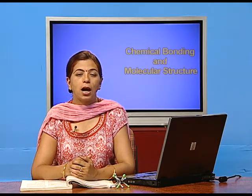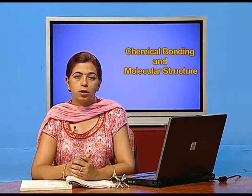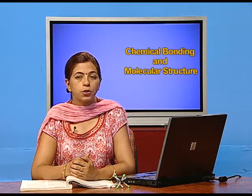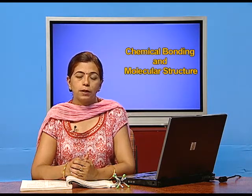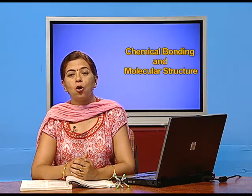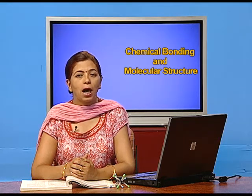Dear students, in this chapter Chemical Bonding and Molecular Structure, we will study about the various types of bonding and the shapes of the molecular structures. Matter is made up of one or different types of elements, and elements are made up of atoms and molecules. But atoms are incapable of independent existence except the noble gases; all other elements exist in the molecular state.